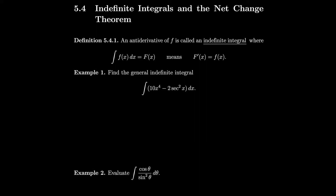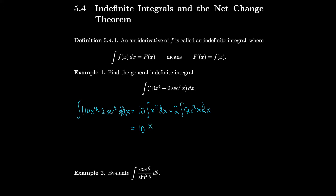Let's find the indefinite integral of 10x⁴ minus 2 times secant squared x, dx. We can take out the 10 and write it as the integral of x⁴ dx, and take out the 2 and write it as the integral of secant squared dx. Then we use the power rule in reverse: raise the exponent and divide by the new exponent.